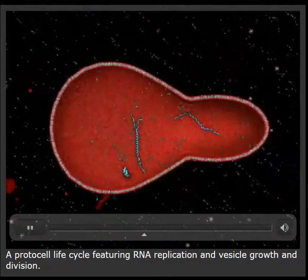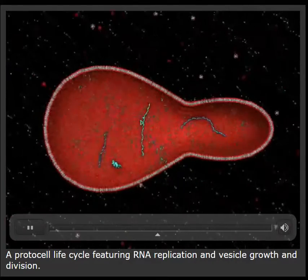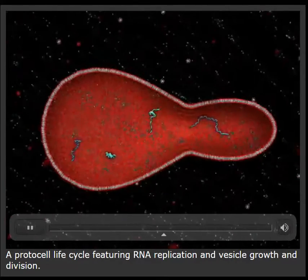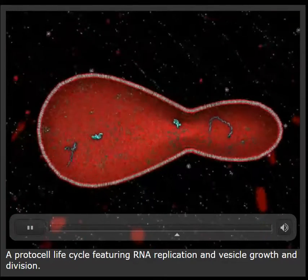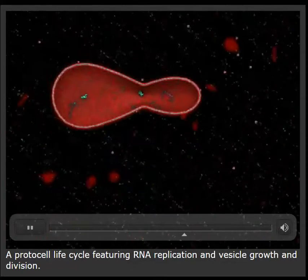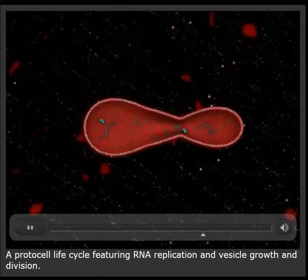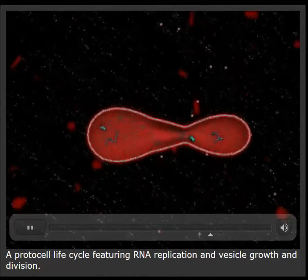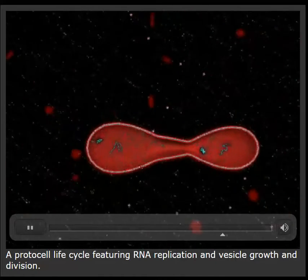Meanwhile, the protocell membrane is constantly growing through the addition of micelles. Increasing the surface area faster than the volume causes the protocell shape to become elongated and unstable.